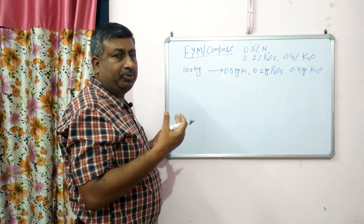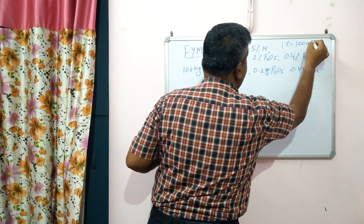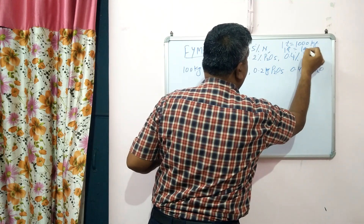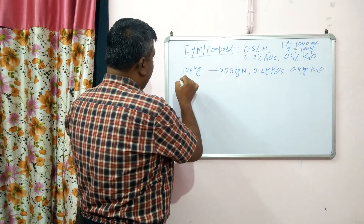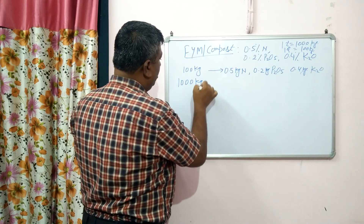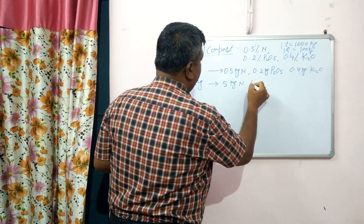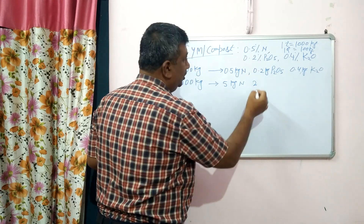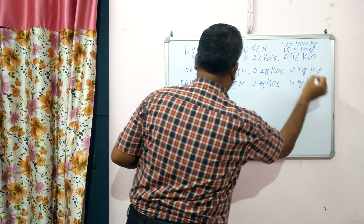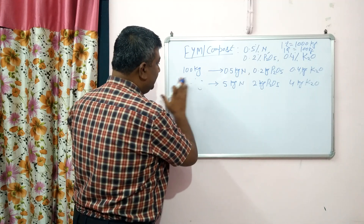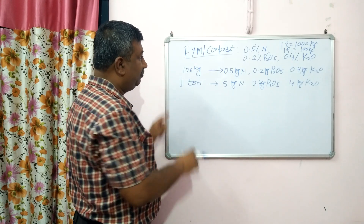We apply FYM and compost in tonnes. So in 1 tonne there is 1000 kg, and 1 quintal is 100 kg — remember that. We apply FYM in tonnes, so we have to calculate for 1000 kg. In 1000 kg, just multiply by 10: we get 5 kg nitrogen, 2 kg phosphorus, and 4 kg potassium. So this is the amount we get from 1 tonne of FYM or compost.